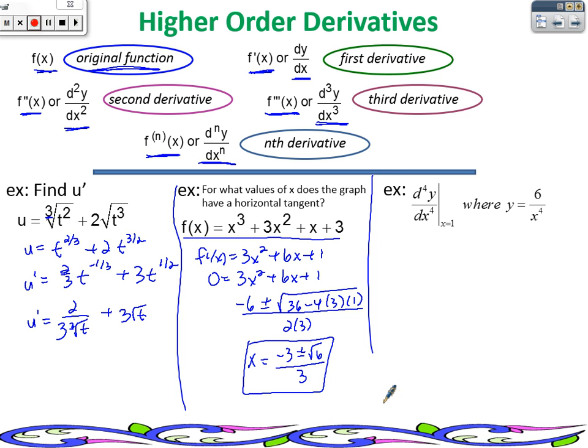And those are the locations where we would have a horizontal tangent to this curve. All right, fantastic. All right, this next one. Now, these little 4's,